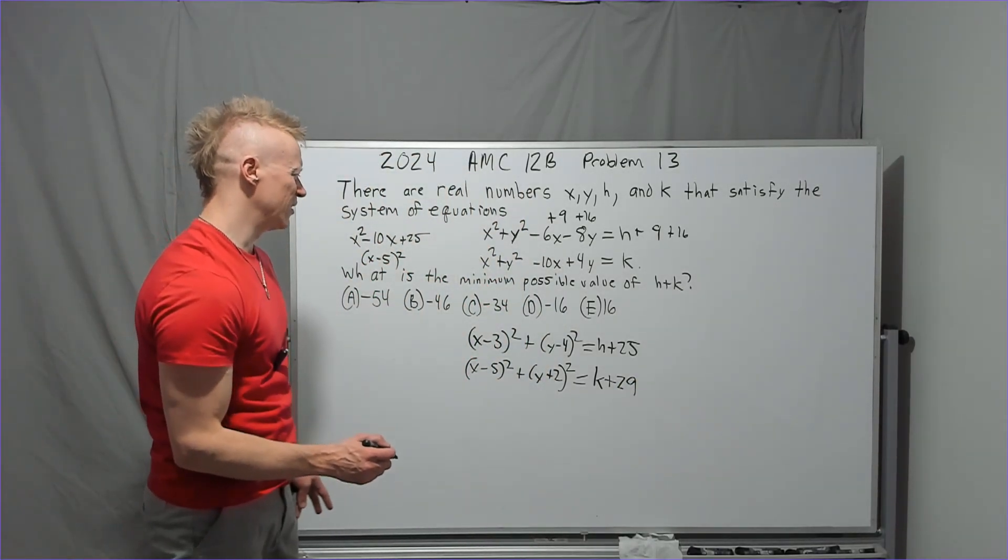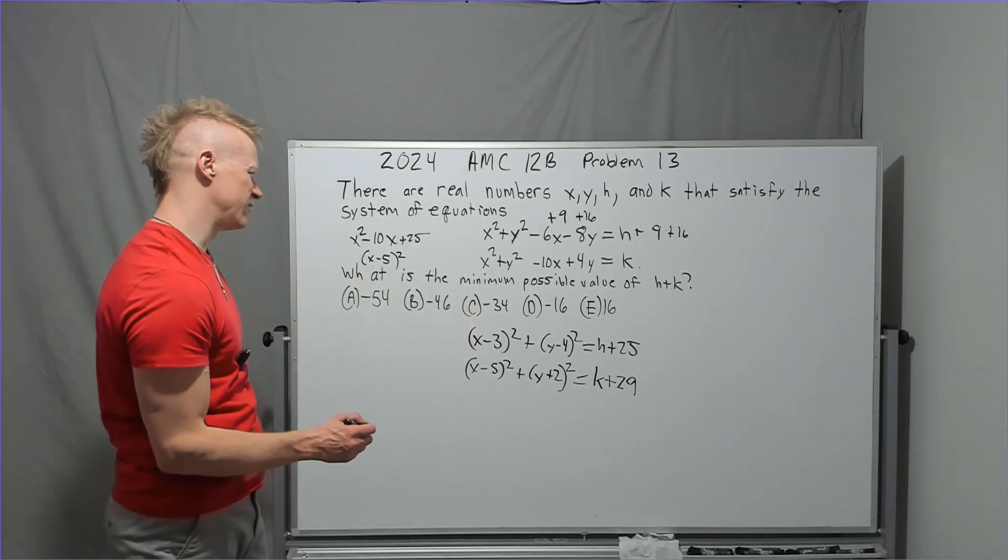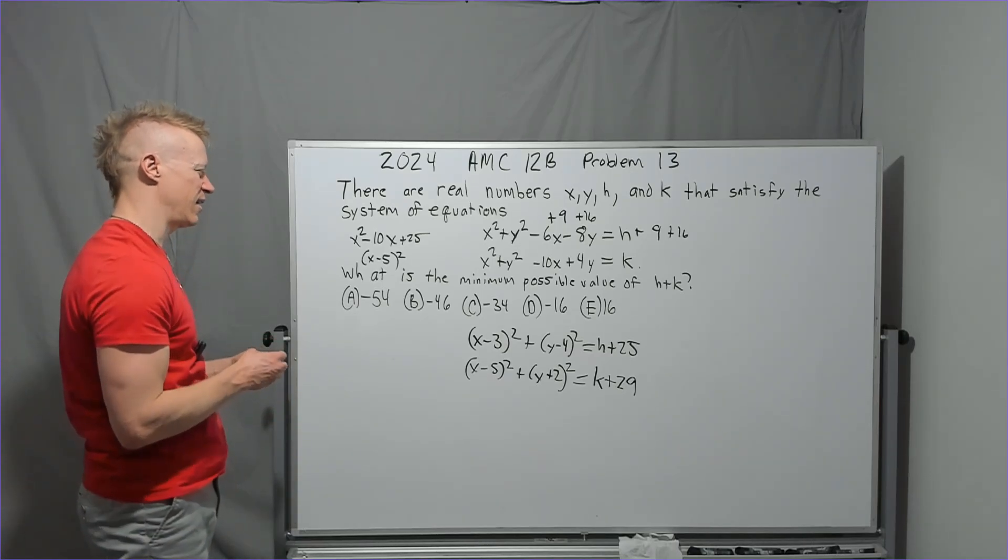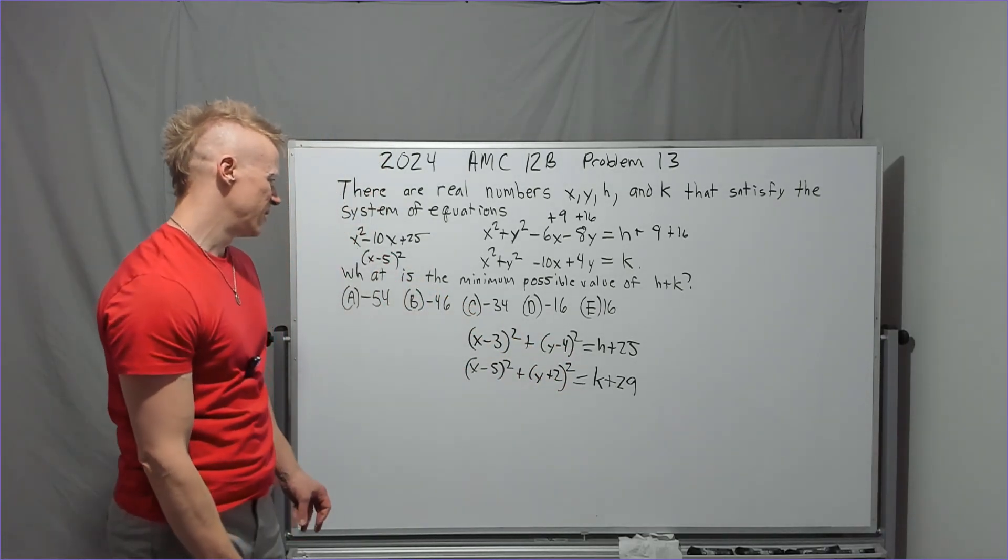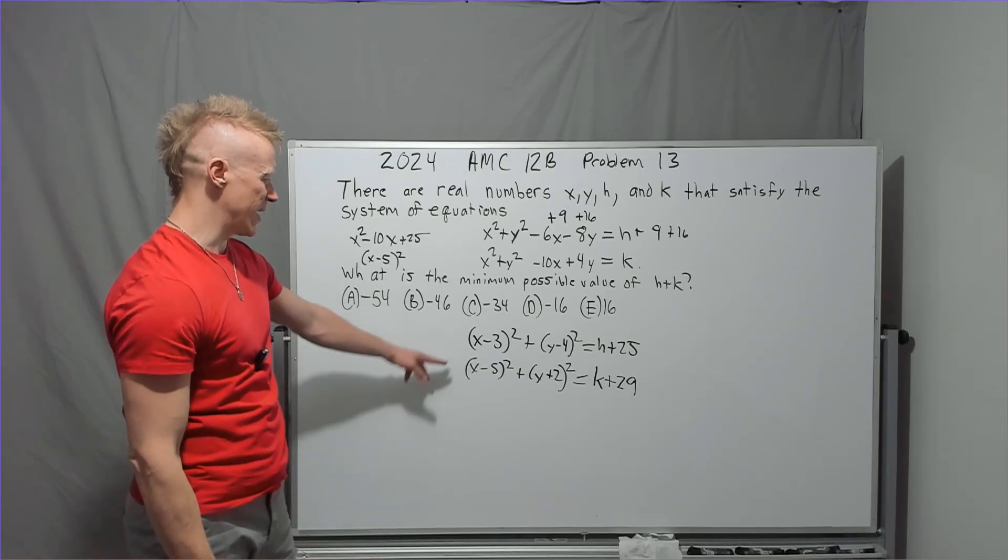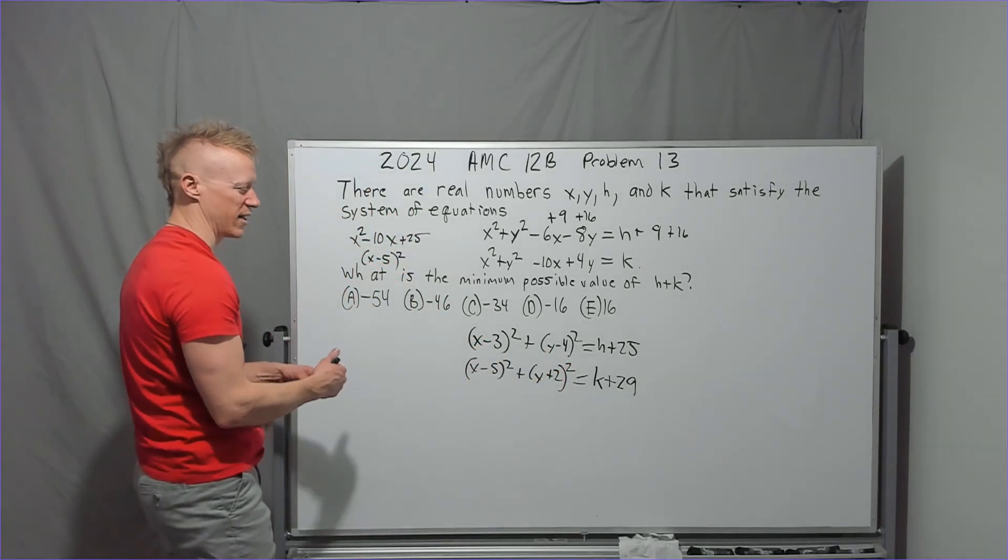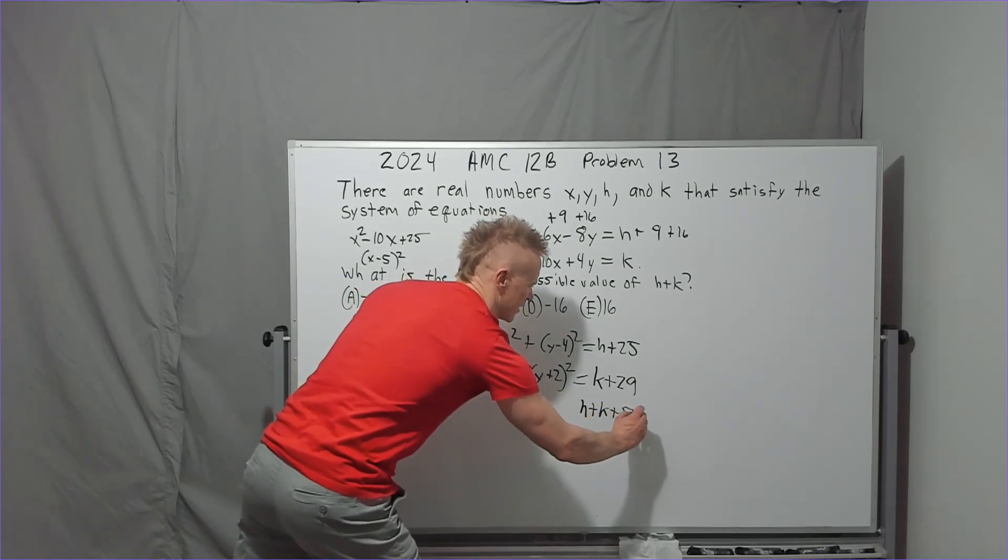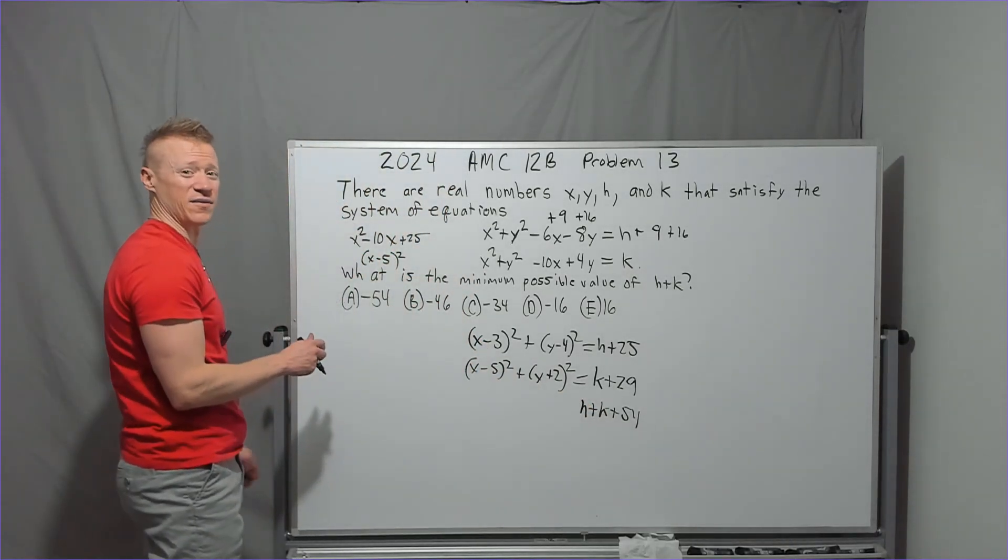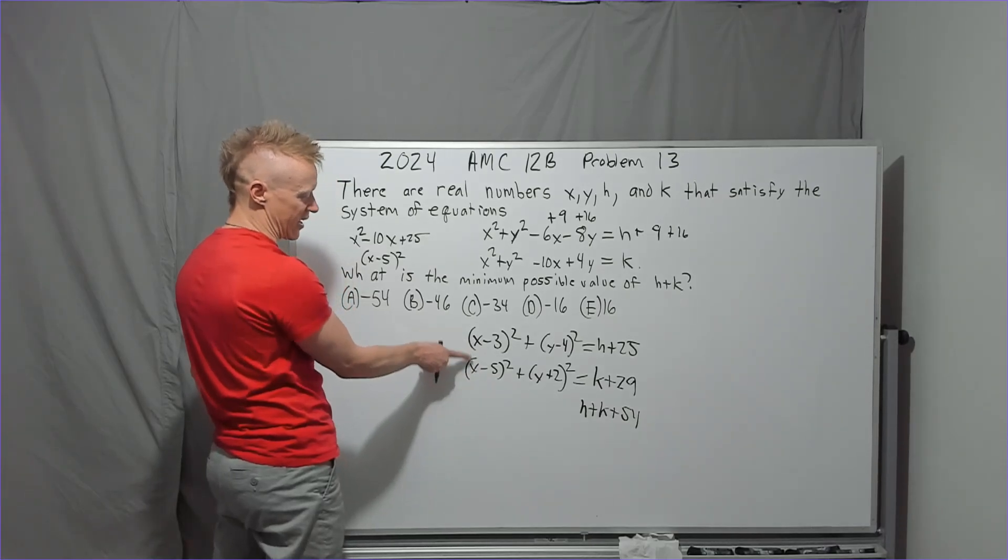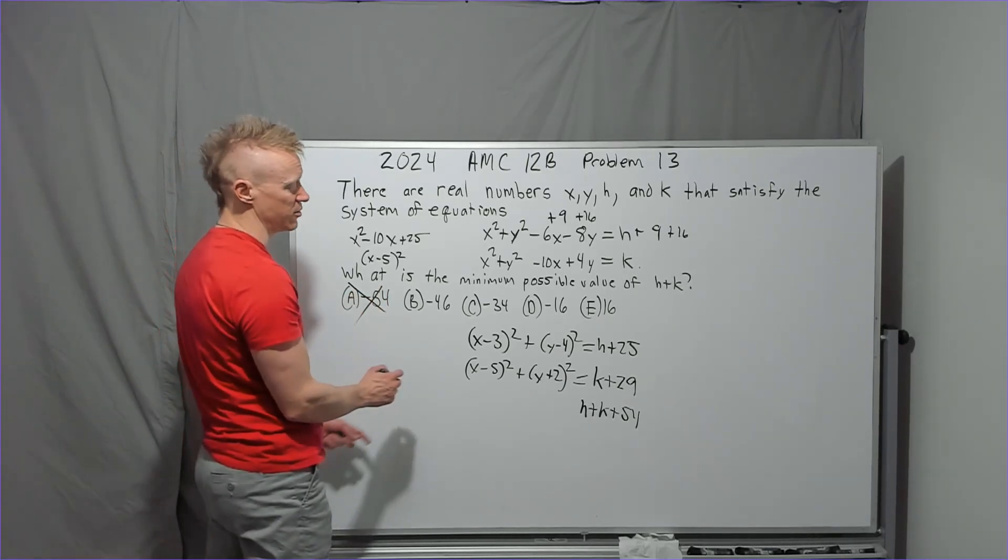And I look at this, and I go, well, what is the minimum possible value of h plus k? And it looks like we can get negative 54. No, maybe not, because you'd have to get... you know why? If you add this and this and this and this, you have four perfect squares. And over here, you get h plus k plus 54. And so you say, well, if I could make all my perfect squares 0, then h plus k could take on this role. But the problem with you thinking that is that x would need to be both 3 and 5 at the same time. That's not going to happen. That's why that's a trap answer, and I hope you didn't do it.